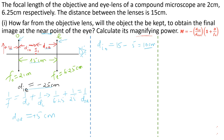The image distance for the objective is positive 10 cm, meaning the image is real. Using the lens formula for the objective, 1/f = 1/u + 1/v: 1/2 = 1/u + 1/10. Solving gives u = 2.5 cm. So the object should be placed 2.5 cm from the objective lens for the final image to be formed at the near point.